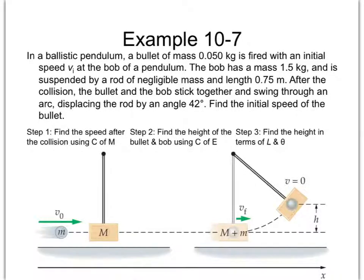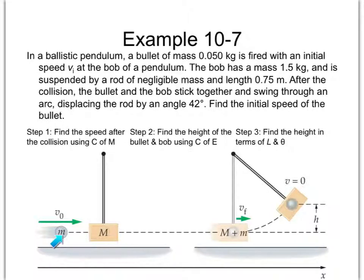Hello again everybody and welcome back. This example, example 10-7, is one that's going to be the principle upon which the ballistic pendulum lab is going to be based. This is a pendulum right here, and at the very end of the pendulum, we call it a bob. This is going to be called a bullet, and they both start with B, so I'll probably change one of the names so we have different first letters.